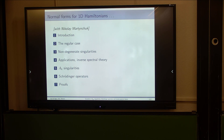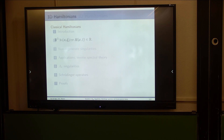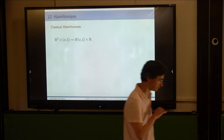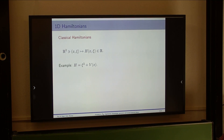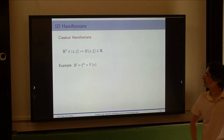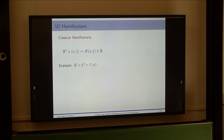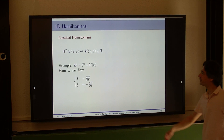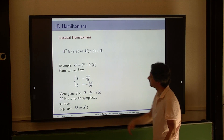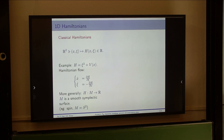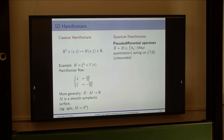I'm going to be very general, so I'm sorry for people who already know this, but I think it's nice to introduce the problem. This is really a one degree of freedom Hamiltonian — just a function of two variables with values in R. One of the most famous Hamiltonians is what I call the Schrodinger Hamiltonian: kinetic energy plus potential energy. You have the Hamiltonian flow, and more generally, any smooth symplectic surface gives a one degree of freedom completely integrable system — just one Hamiltonian.